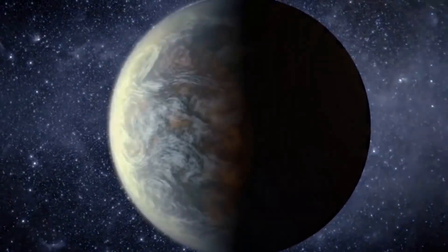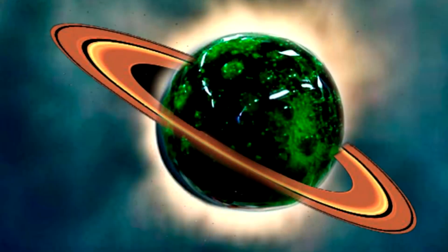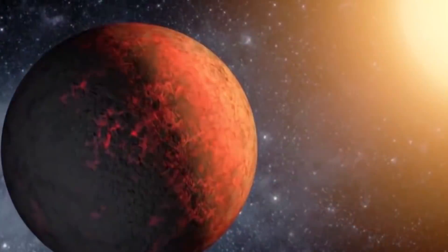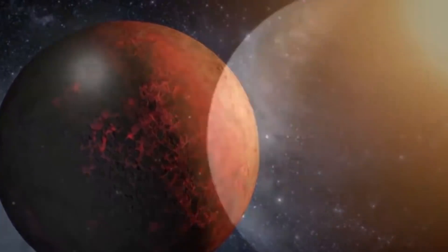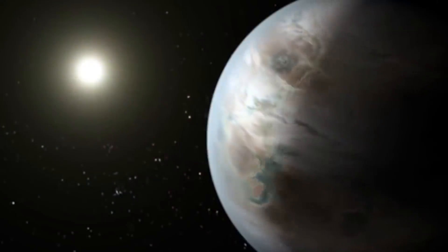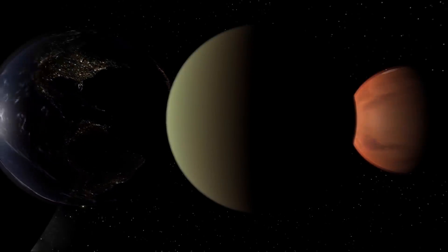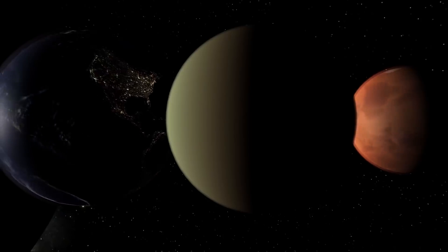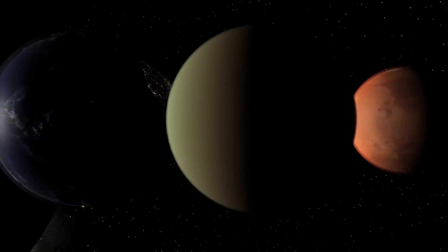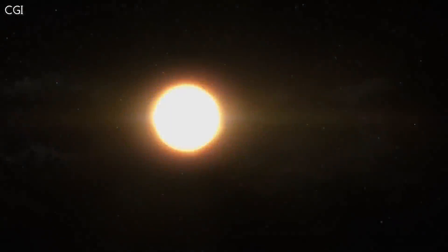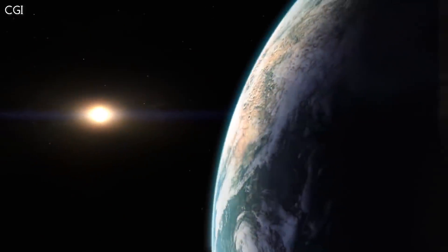These exoplanets are those planets that are outside the solar system. That is, they orbit in a different star than the sun. However, some of these discovered planets are so strange that they look like they were taken from a horror movie. So get ready, because right now we are going to review some of the strangest planets that exist in the universe.